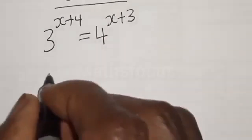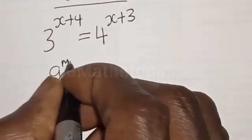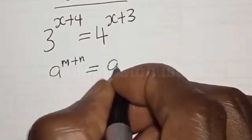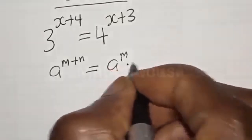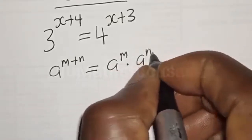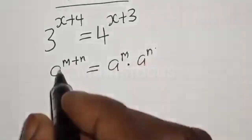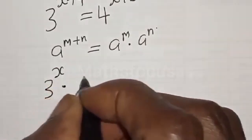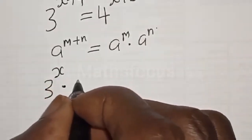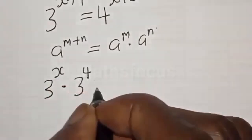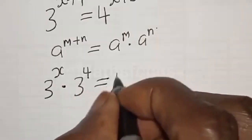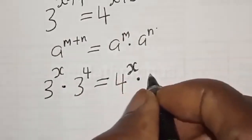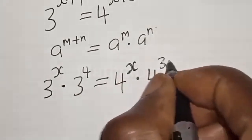Remember, if you have 3 raised to the power m plus n, it is the same thing as 3 raised to the power m multiplied by 3 raised to the power n. Then we have 3 raised to the power x multiplied by 3 raised to the power 4 is equal to 4 raised to the power x multiplied by 4 raised to the power 3.